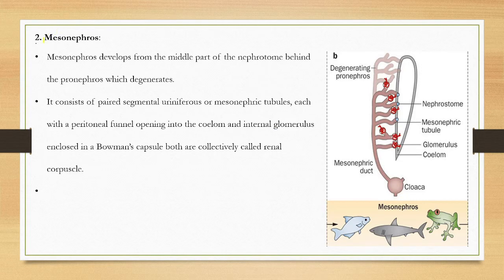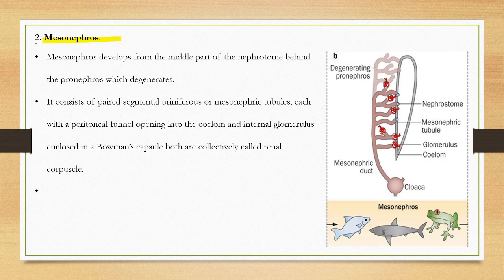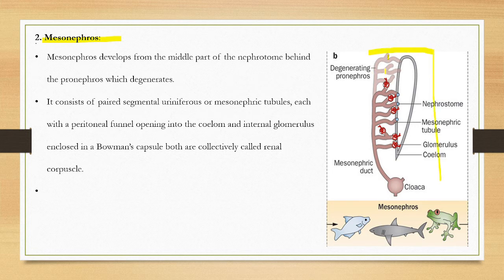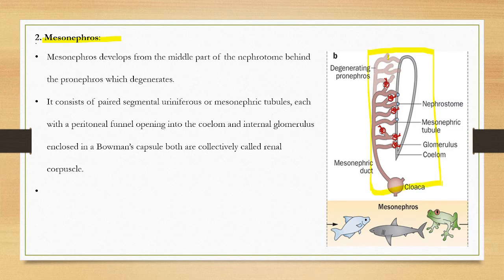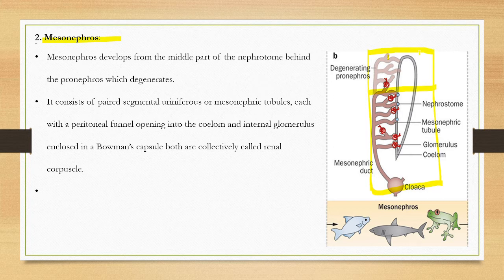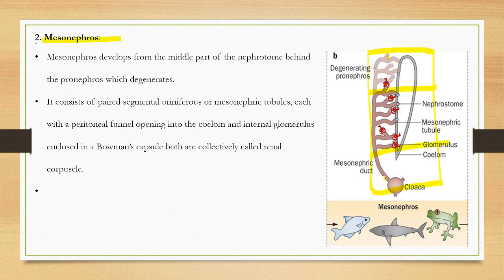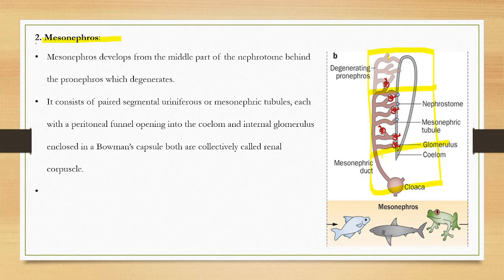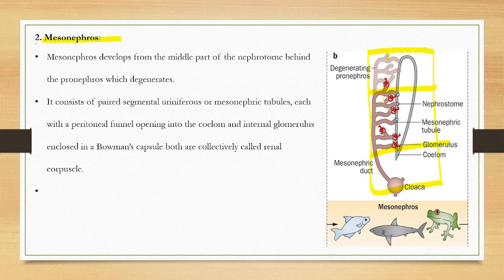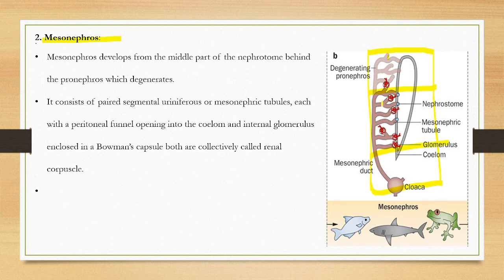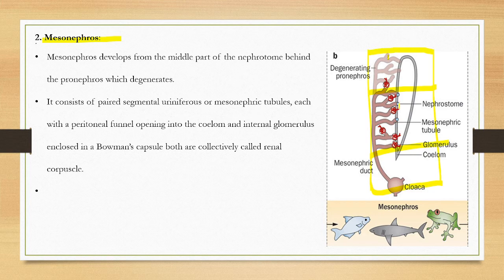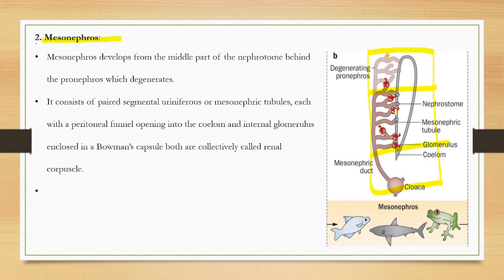The mesonephros develops from the middle part of the nephrotome. It is developed in the middle region behind the pronephros. It is called mesonephros. The characters are different from pronephros. You can see the glomerulus which is enclosed in a Bowman's capsule, and collectively we call this the renal corpuscle.